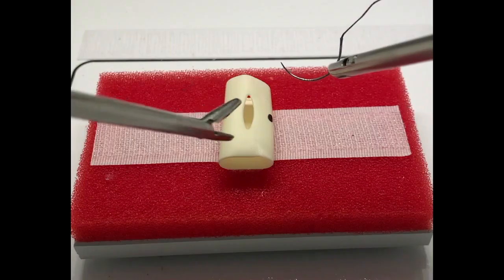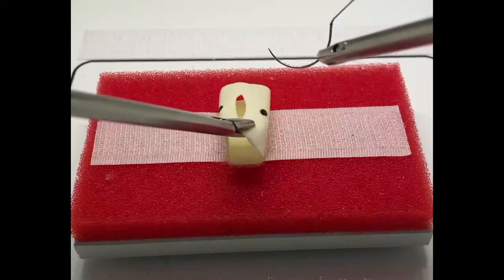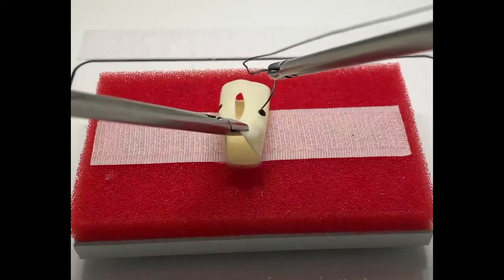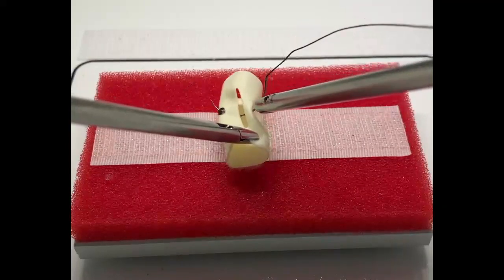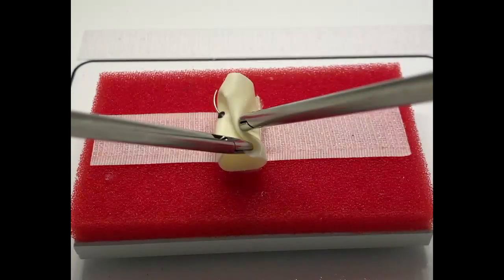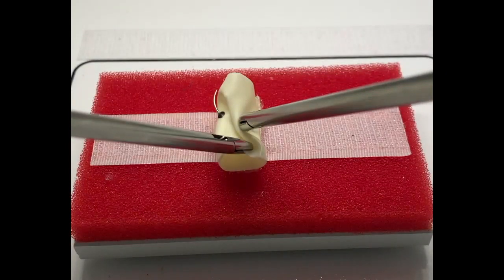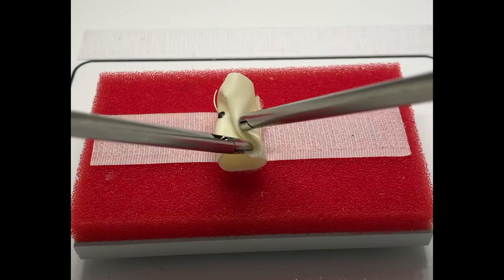To suture, grasp the penrose, tent it up to create tension, and manipulate the drain to expose the black dots. Rotate your hand back so the needle enters the drain at 90 degrees and drive the needle towards the black dots. By manipulating the drain and placing countertraction, exposure is improved and small adjustments can be easily made when off target.